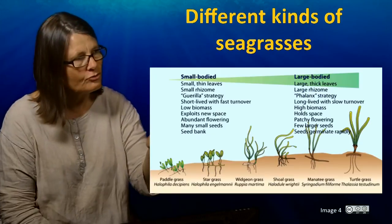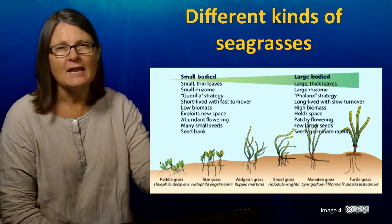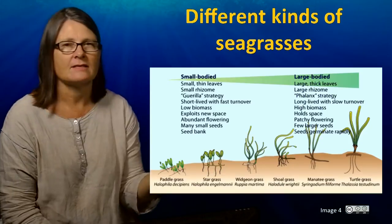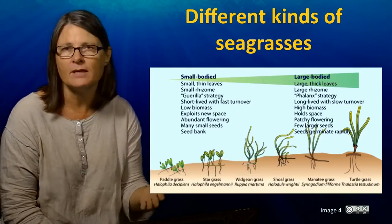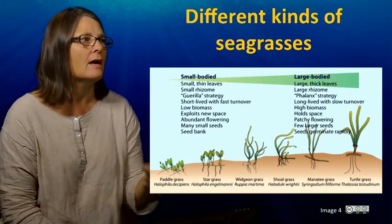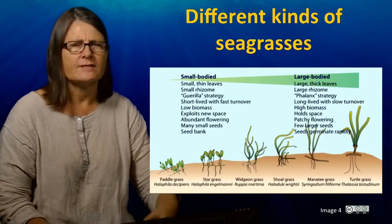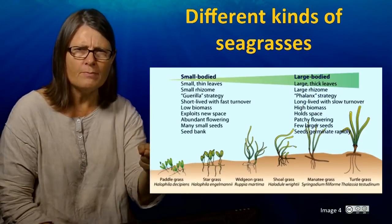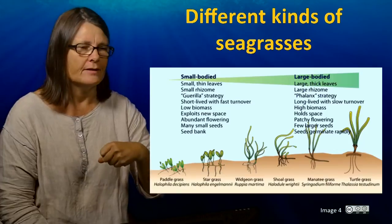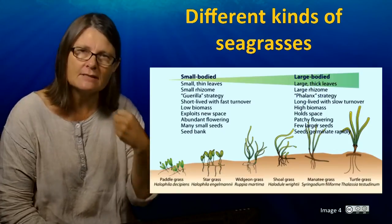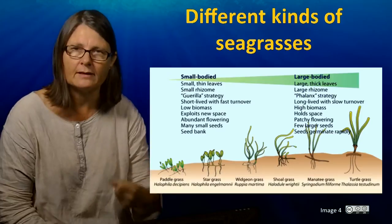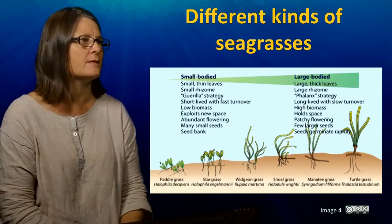In contrast, the large species, like Enhalus and Thalassia - which is extremely common in the Caribbean - have large rhizomes, robust thick leaves, and they actually grow relatively slowly and don't respond quite as quickly to disturbances.